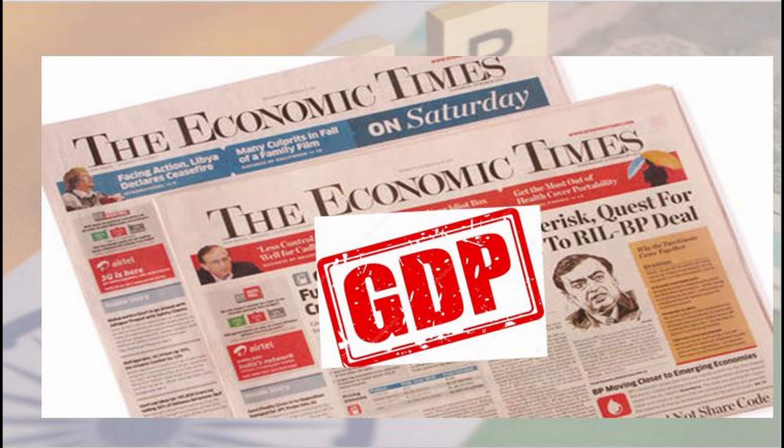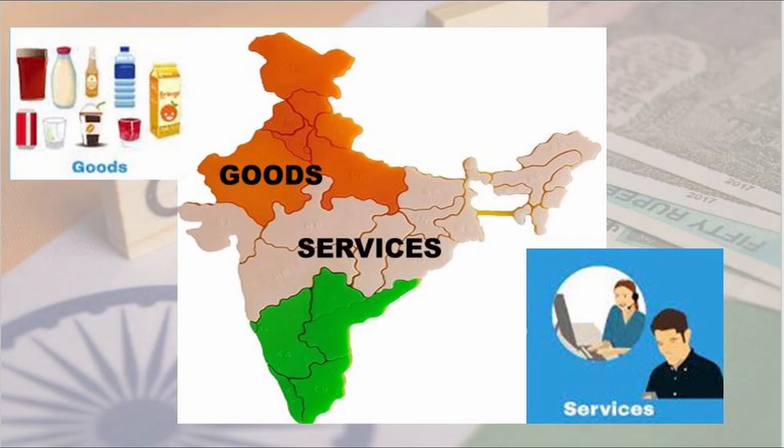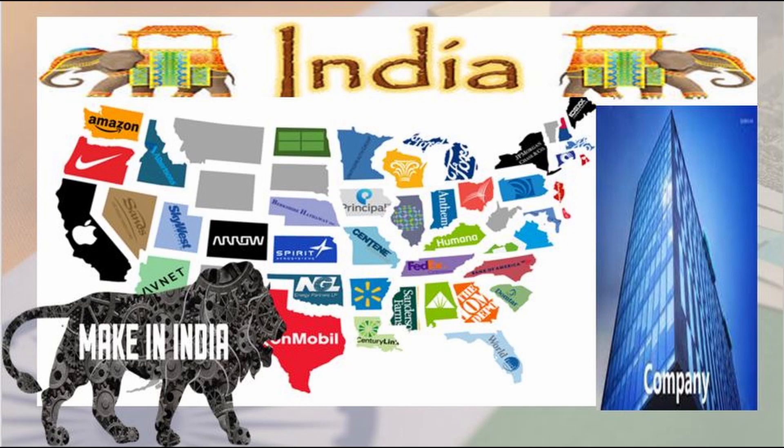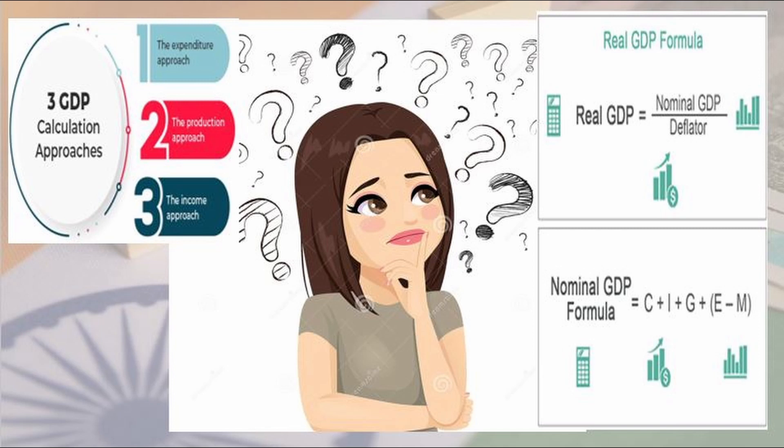GDP — we have always come across this word in newspapers. The value of all the goods and services produced within a year in a country is called GDP. Not only this, if a company of the USA comes to India to manufacture something, then it will be counted in the GDP of India. That's why we focus so much on the 'Make in India' campaign.